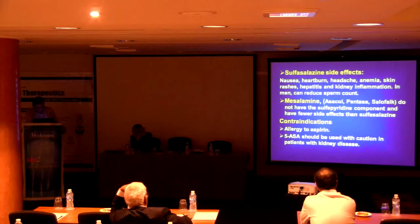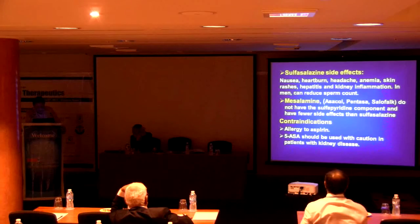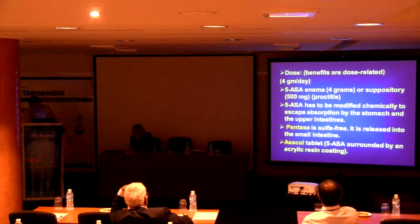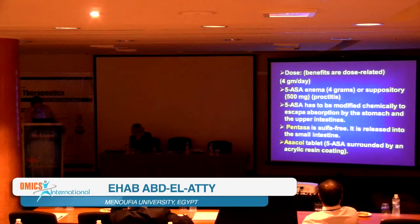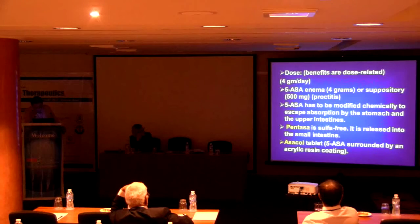Contraindications for 5-ASA include aspirin hypersensitivity, and it should not be given in patients with renal disease. The total dose is about 4 grams per day. Some preparations other than tablets include enemas containing 4 grams or suppositories of about 500 mg, which can be used in proctitis. 5-ASA can be chemically modified to escape absorption by the stomach and upper intestine and open directly in the colon.